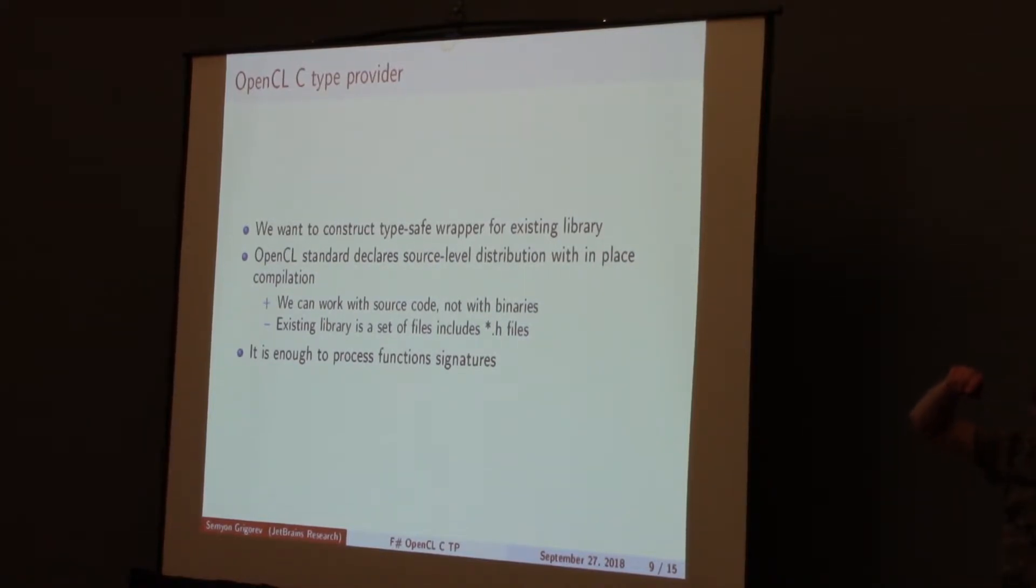Our solution is yet another type provider. We created OpenCL C type provider. Let's remind what we want. We want to provide the ability to use existing OpenCL C libraries in our programs. And OpenCL standard declares source-level execution so we can process source code, not binaries. It's important because we can get all type information. On the other hand, we have a problem because in our case, the existing library is a set of files. Maybe with some structure, maybe with header files, and so on. But for first step, we can just process all function signatures and provide the ability to call these functions.